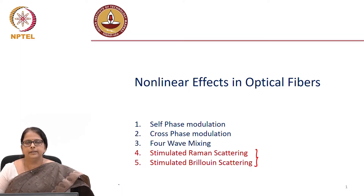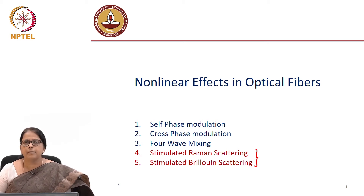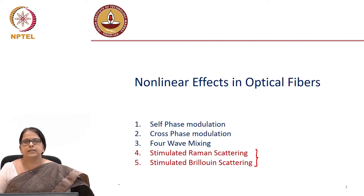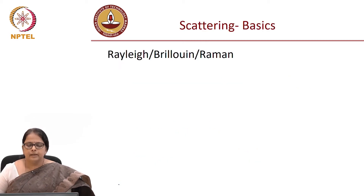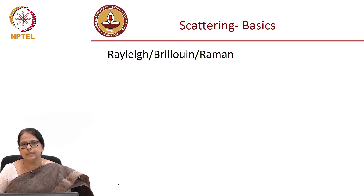We will now start with the other two nonlinear effects that affect data propagation through the optical fiber. These two nonlinear scattering effects are Raman scattering and Brillouin scattering. In fact, an optical fiber poses three types of scattering.